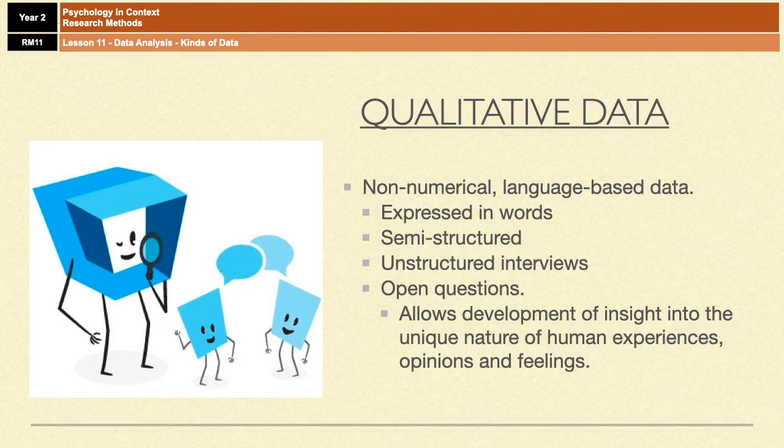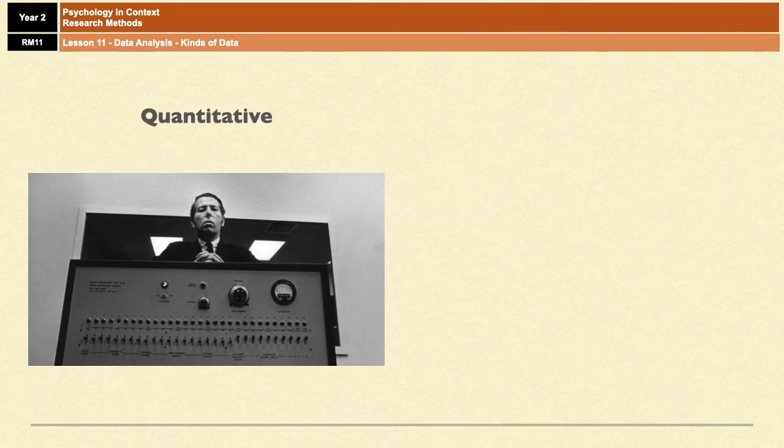So just an example for both of them. You have Milgram as an example of quantitative data. They were working their way up the shock generator, and Milgram was very easily able to count up how many people went all the way up to 450 volts, how many people dropped out at 300 volts, and so on.